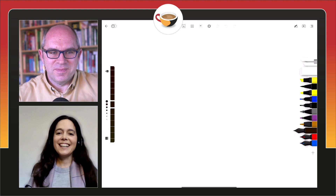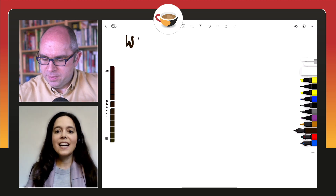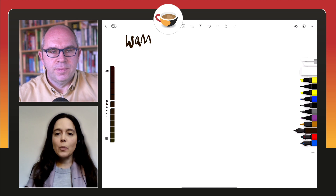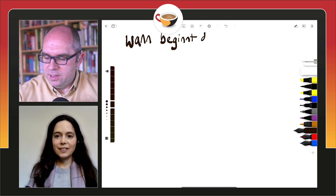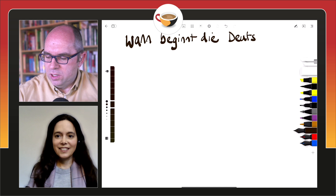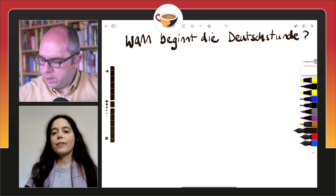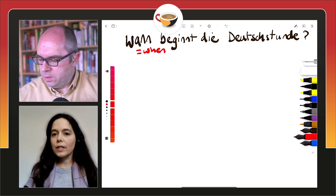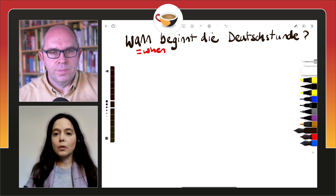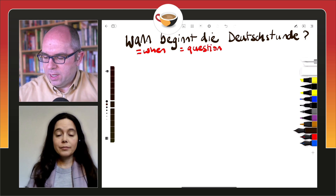Thank you, Chuck, for this very interesting question, which I love answering. Let's look at each of these words individually. Let's start with wann. Wann is always asking a question. For example, wann beginnt die Deutschstunde? — When does the German lesson begin? Wann fährt der Zug? Wann kommst du? So it's always a question about what time or when something is happening.